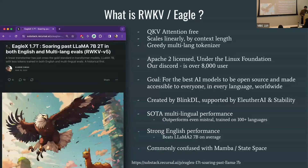A lot of you may not have heard of us, so basically what is the RWKV Eagle project in a nutshell. It's a QKV attention-free model that scales linearly by context length with a greedy multi-length tokenizer. It's Apache 2 licensed under the Linux Foundation. Our Discord is over 8,000 users strong, and we apparently have another 8,000 plus in China that is not on our Discord because of the Great Firewall. Our open source core goal is to build the best AI model to be open source and make it accessible to everyone in every language worldwide.